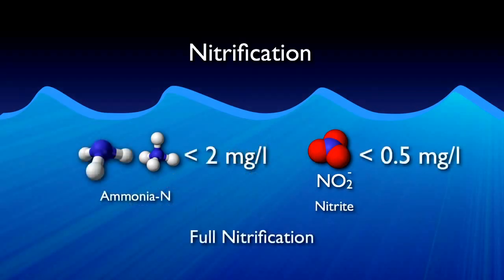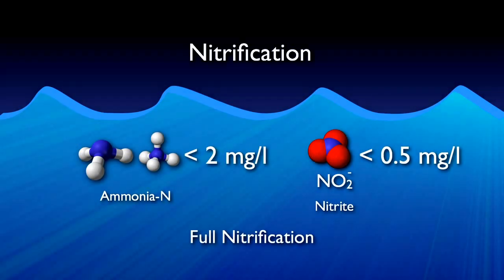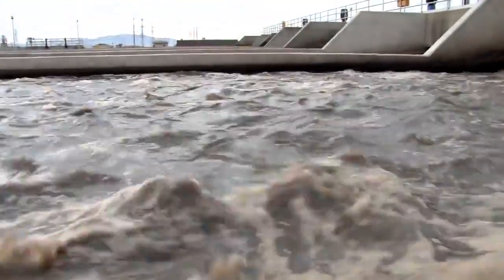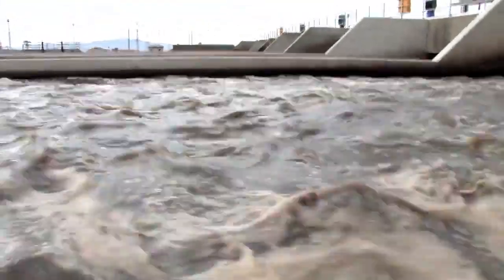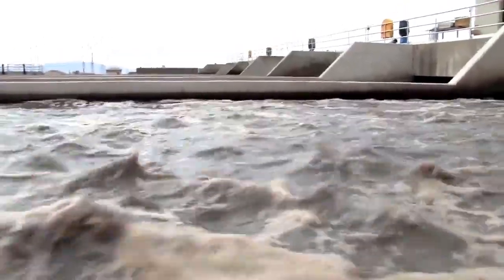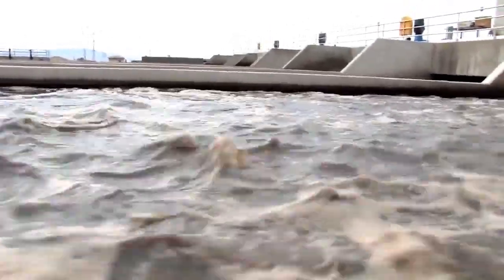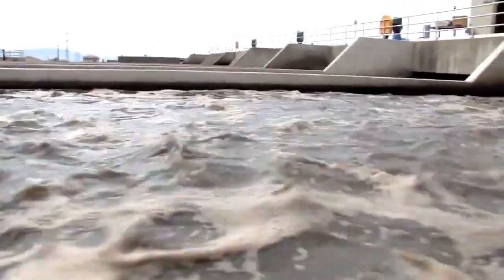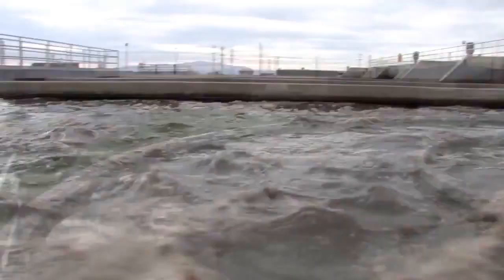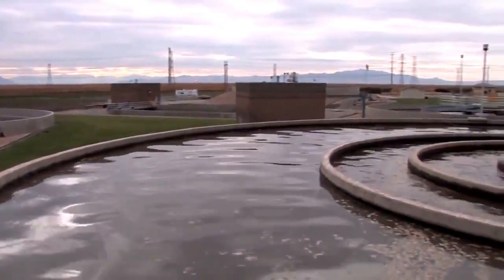Full nitrification is observed when ammonia concentrations are reduced to less than 2 mg/L and nitrite concentrations to less than 0.5 mg/L. Nitrification is a very oxygen-hungry process. To remove one pound of BOD, 1.2 pounds of oxygen are required; however, to reduce one pound of ammonia to nitrate, 4.6 pounds of oxygen are required.